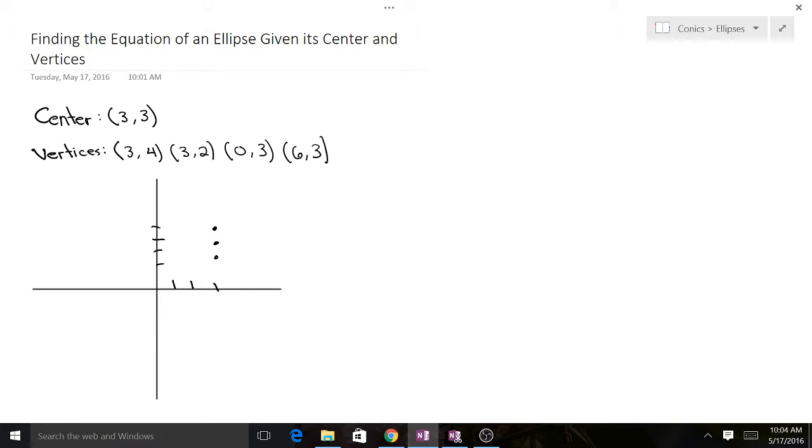Then we've got 0,3 and 6,3. Well, 0,3 is going to be right there. And 6,3 is going to be right here. Then we can connect the dots in an oval. And that's generally what we're working with.